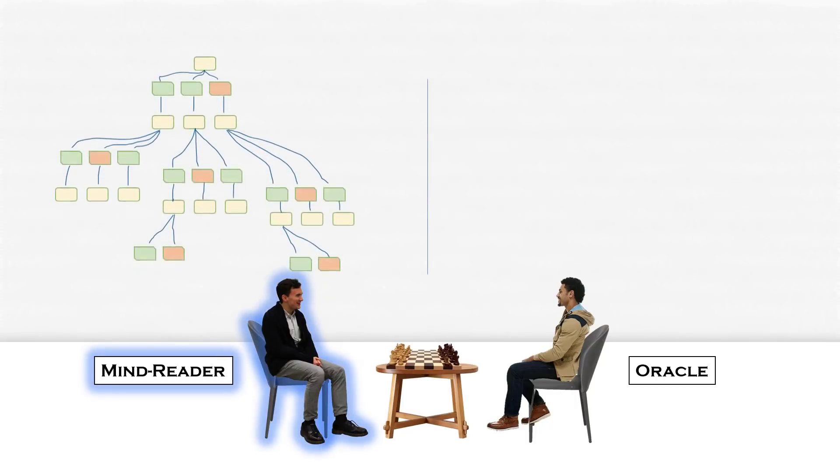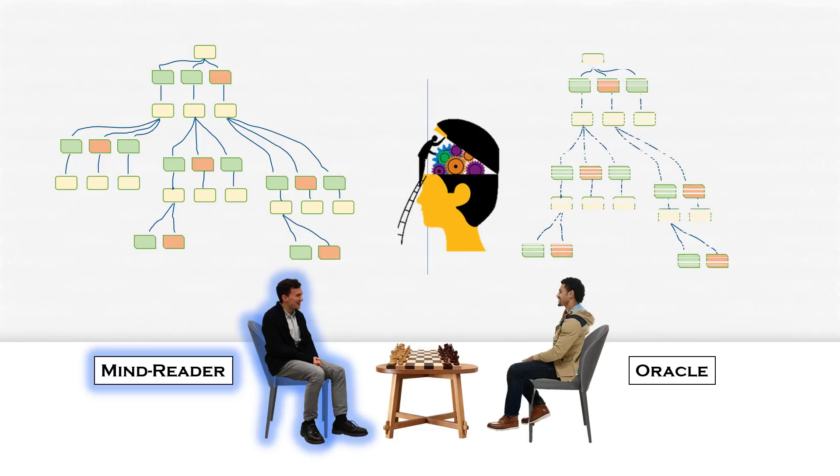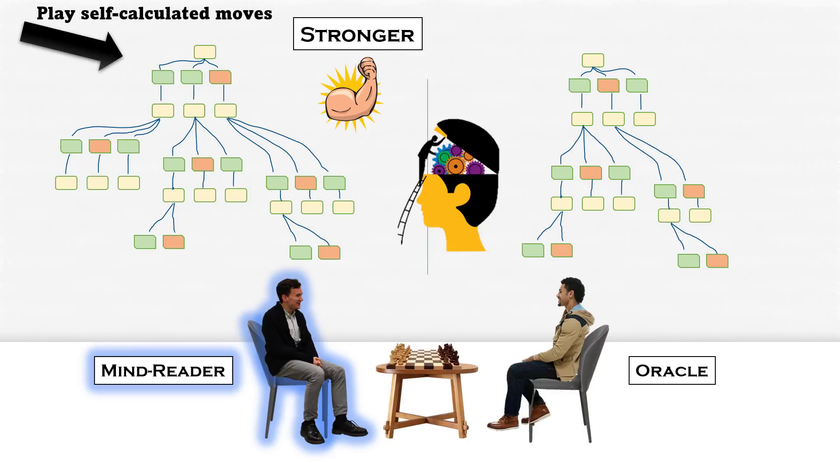Now think from the perspective of the mind reader. The mind reader can read the mind of his opponent and he can compare his own calculation depth with the depth of his opponent. If the mind reader feels that his own calculation is stronger than his opponent, then he simply has to play his own calculated moves to easily win the game.